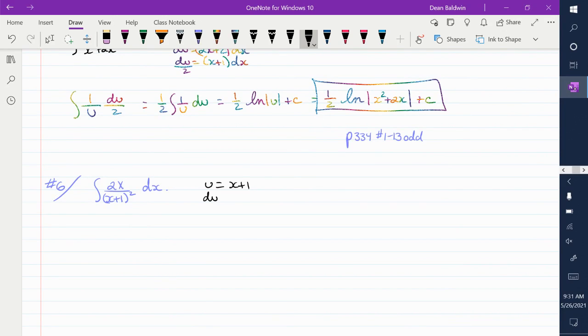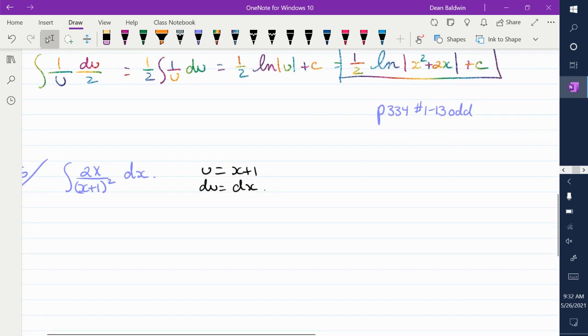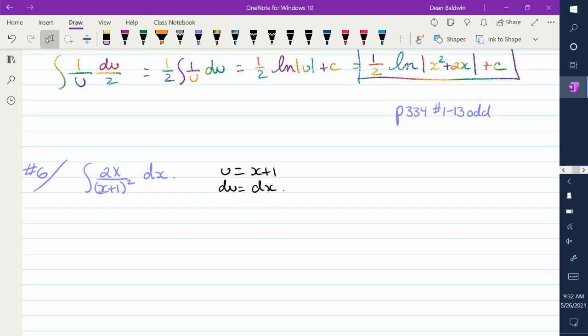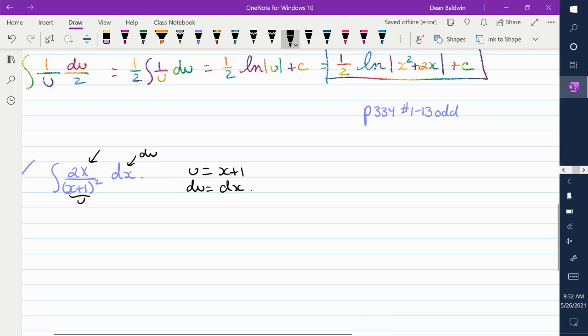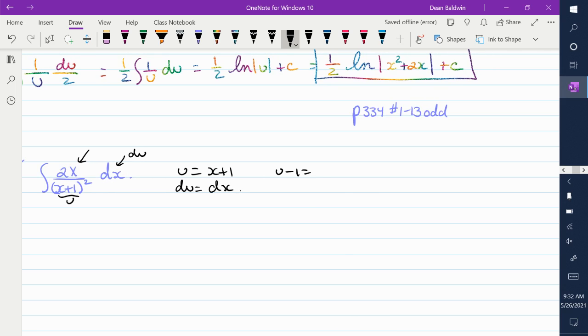So, du is equal to dx. What's the problem? It doesn't equal the top. This is u, that's du. Exactly. So it's like the substitution we did before. I'm going to get rid of that x by rewriting it as u minus 1 is equal to x.